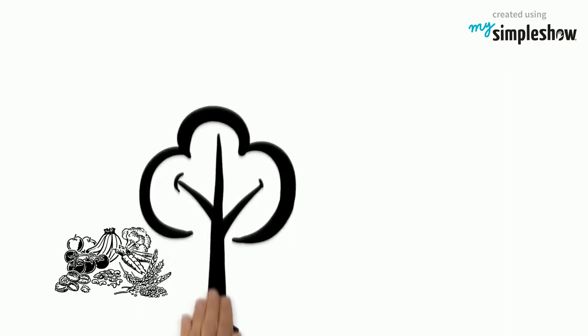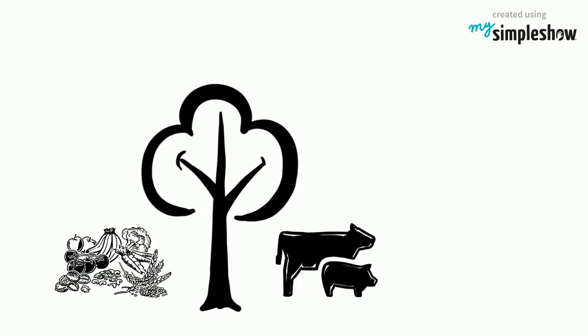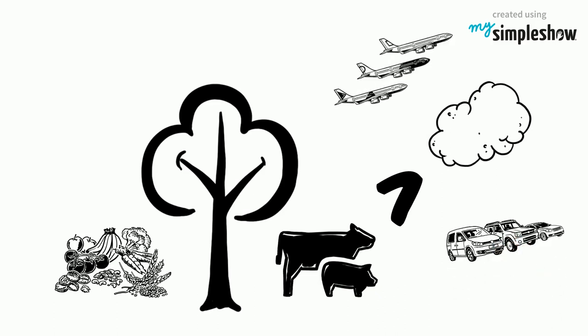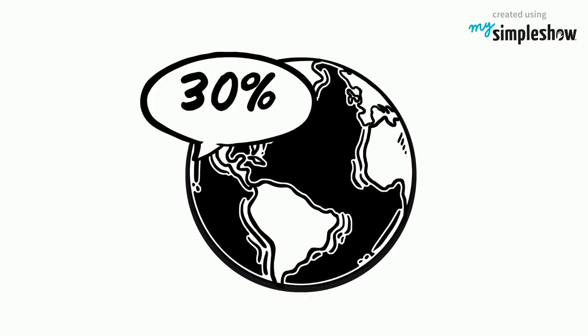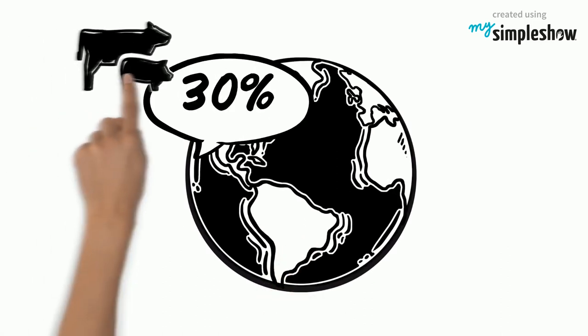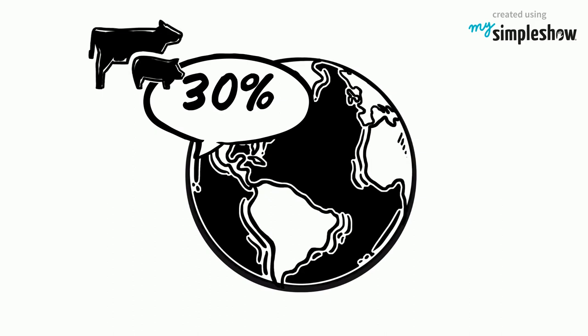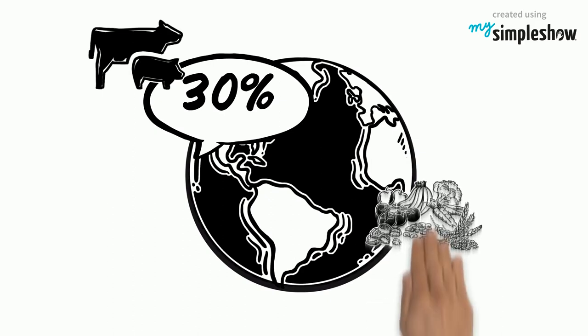These healthy alternatives not only affect your body, but the environment as well. Raising animals for food creates more greenhouse gas emissions than cars and planes. 30% of the Earth's landmass is dedicated to raising animals for food. This includes the land used for grazing and growing feed crops.